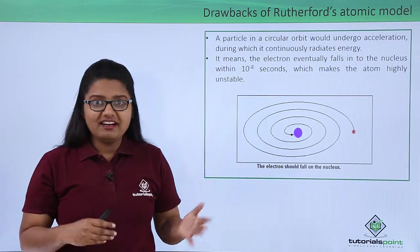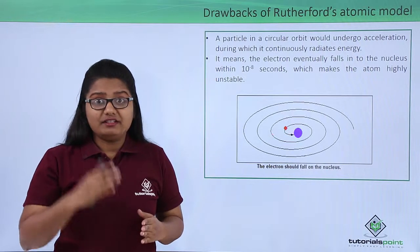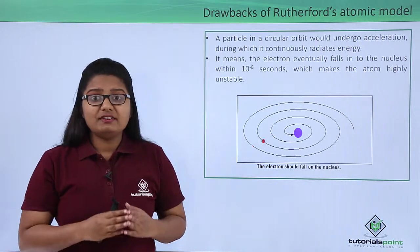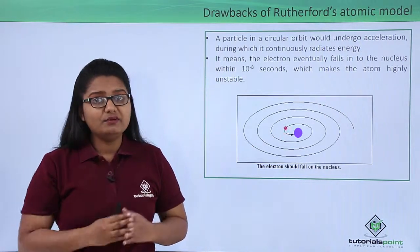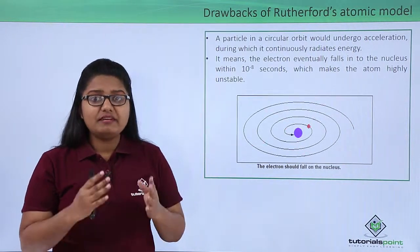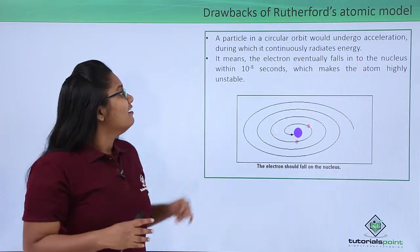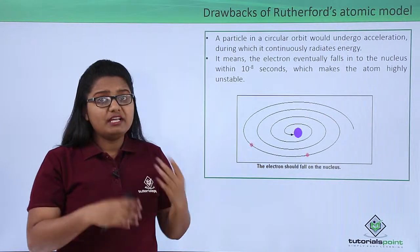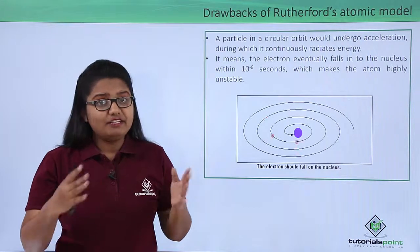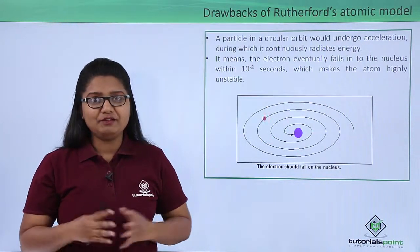So in this video we learned that the positively charged center of an atom is called the nucleus, and electrons revolve around the nucleus in circular orbits. The size of the nucleus is very small compared to the size of the atom. This model was not able to explain the stability of the atom. I hope you all had fun learning this lesson. Thank you.